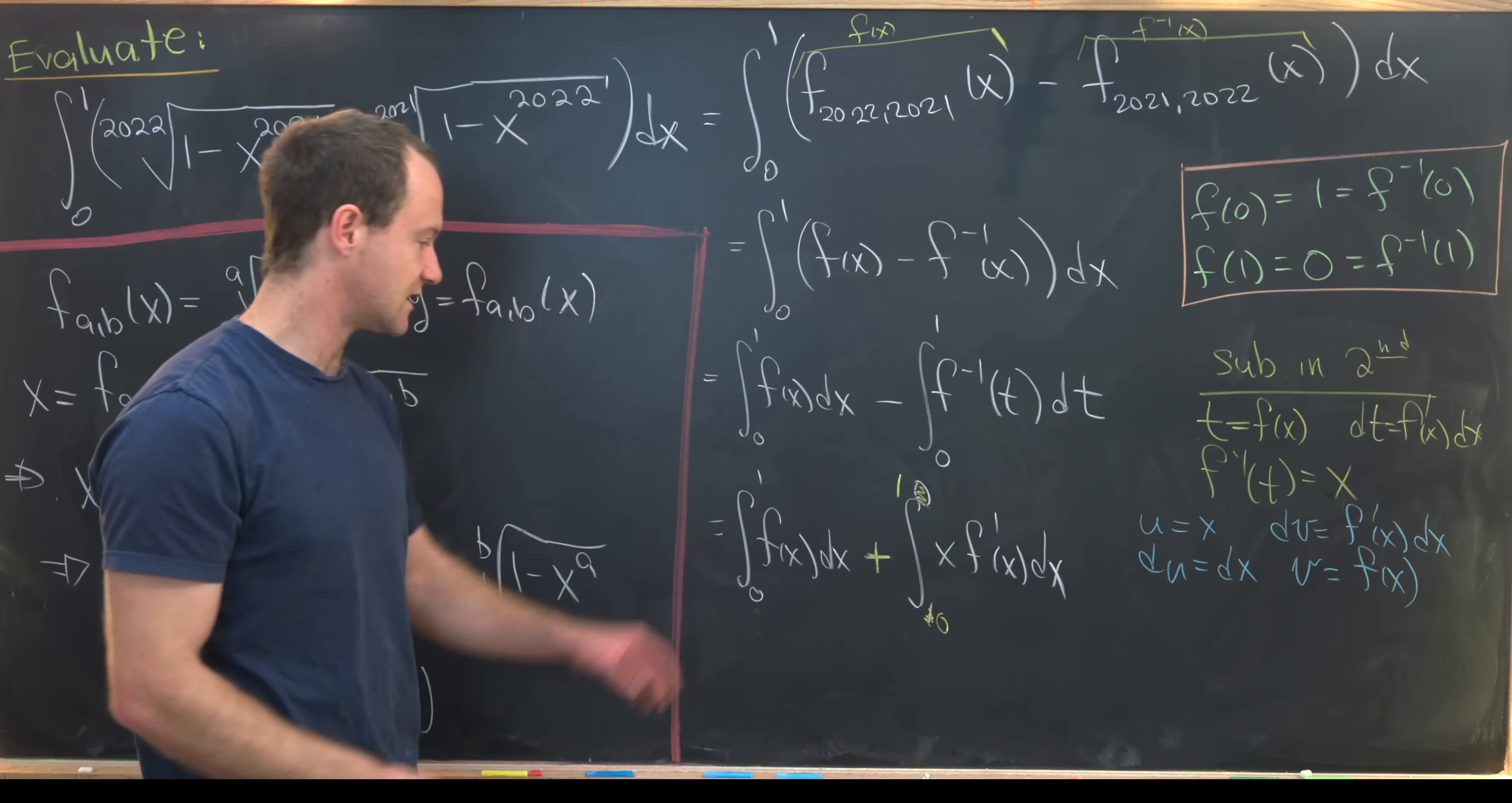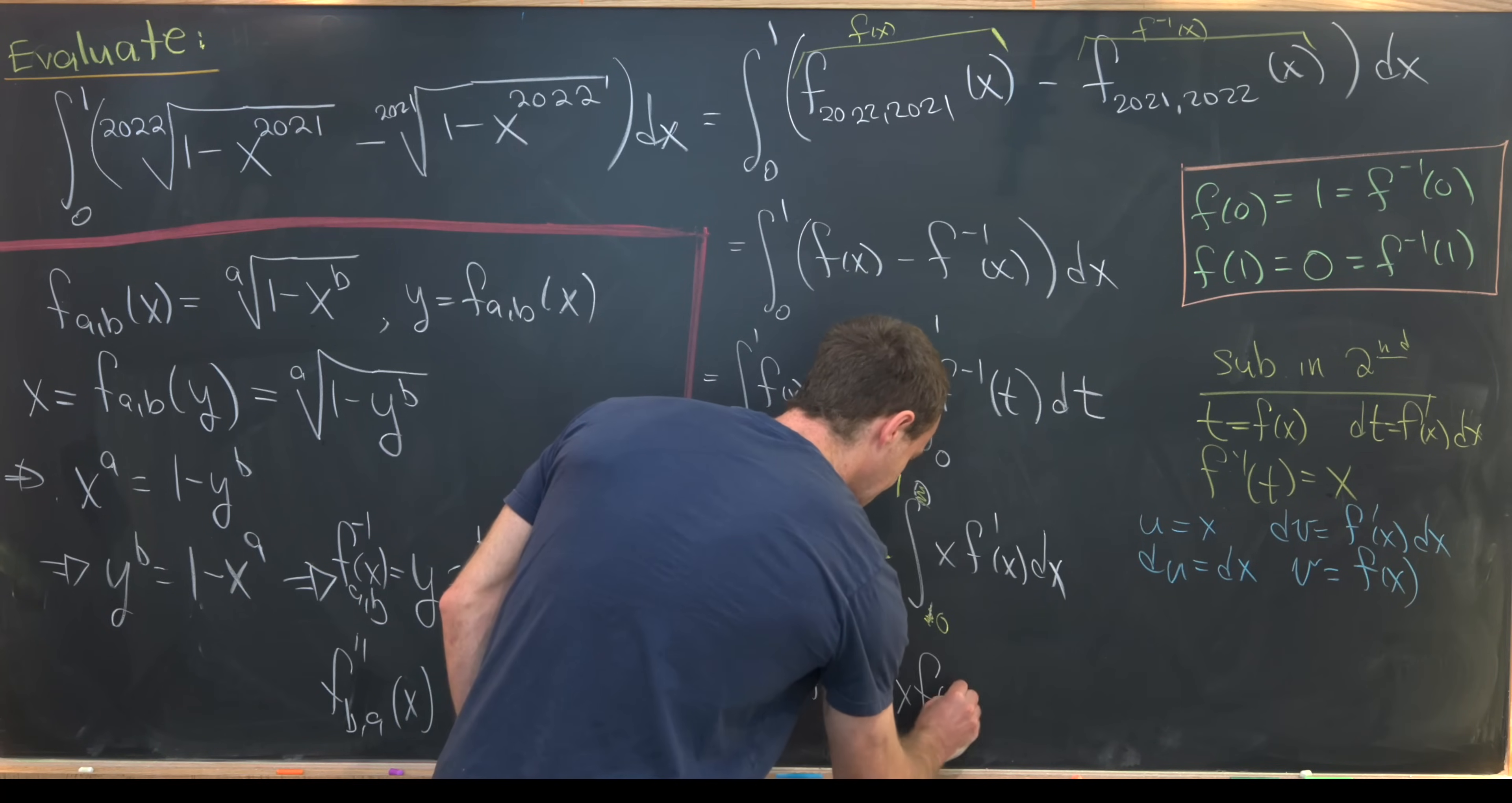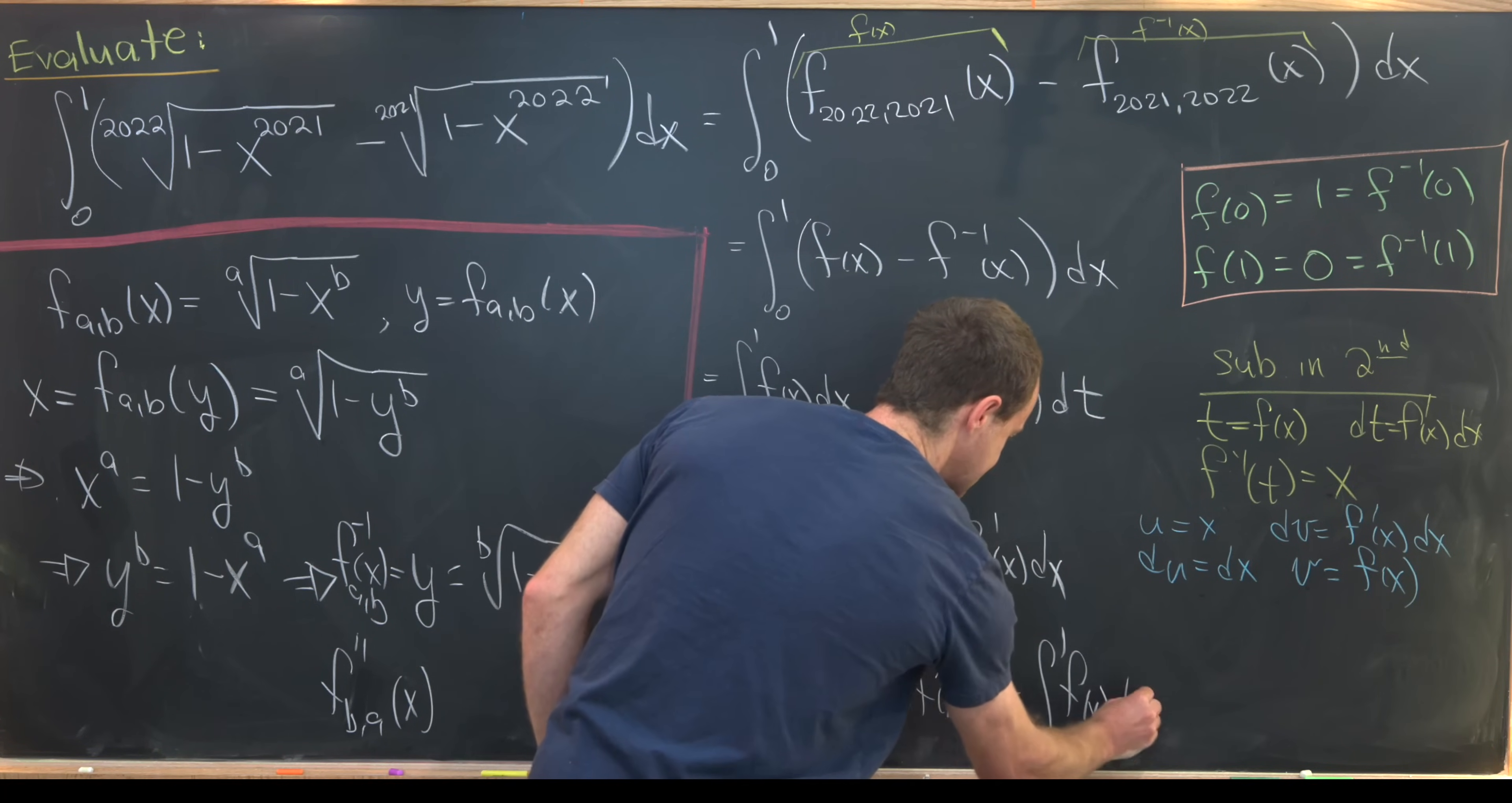So now let's see what we've got. We've got the integral from 0 to 1 of f of x dx, and then plus u times v, so that's going to be x times f of x evaluated from 0 to 1, minus the integral of v du, so that's minus the integral from 0 to 1 of f of x dx.